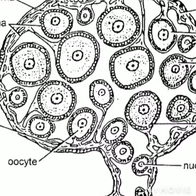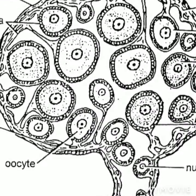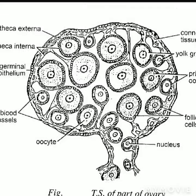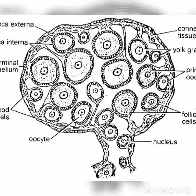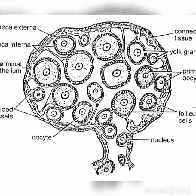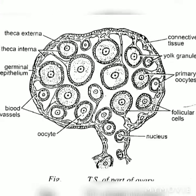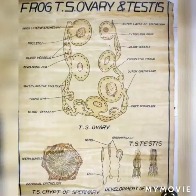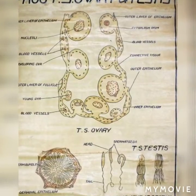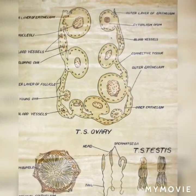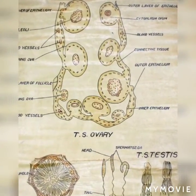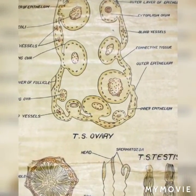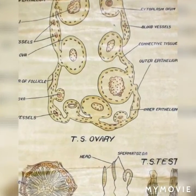Comments on TS of ovary of frog. The ovary consists of a number of hollow lobes or lobules in which ova are formed. Several follicles of various sizes are connected to the theca externa. Each ovum has a nucleus surrounded by yolky granular cytoplasm.